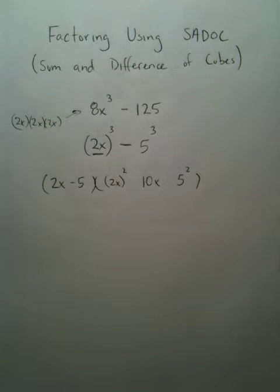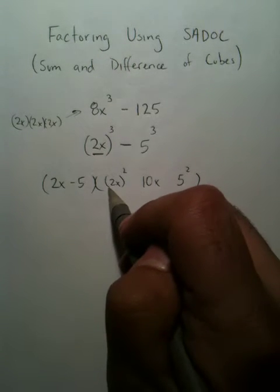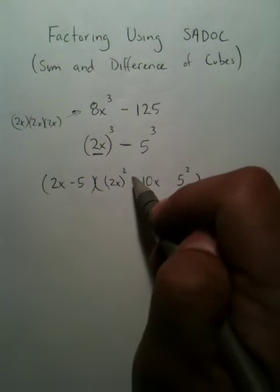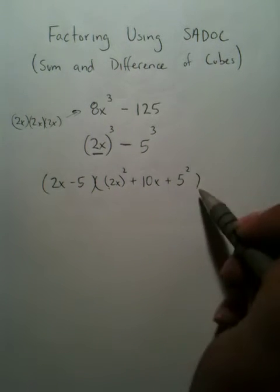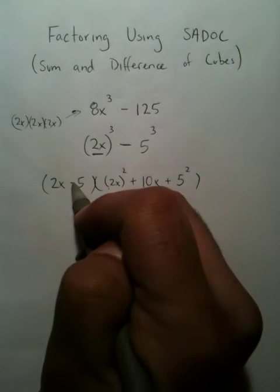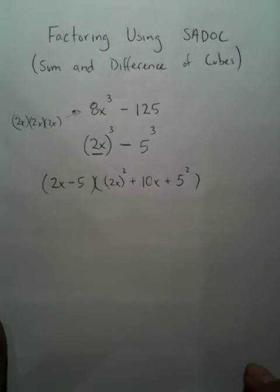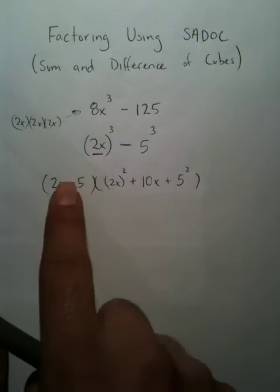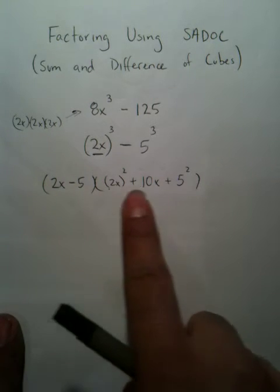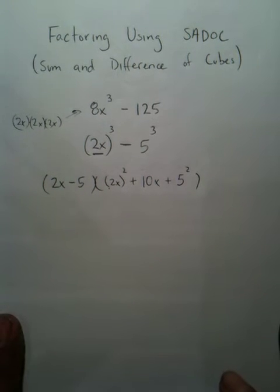People often get confused on the signs. This is always positive and this is always positive. In this instance, everything in the trinomial is positive because the general rule with all SADOC problems is that there will only be one negative in your entire factored solution.